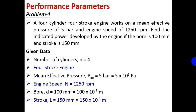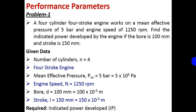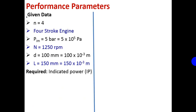Always use the notations so it will be easy to use them in the formula. The required data is indicated power IP. The consolidated given data: n = 4, 4-stroke engine, Pim = 5 × 10⁵ Pascal, N = 1250 RPM, D = 100 × 10⁻³ m, L = 150 × 10⁻³ m. Required: indicated power IP.